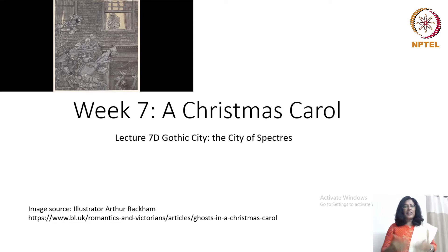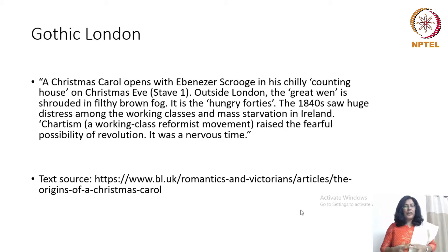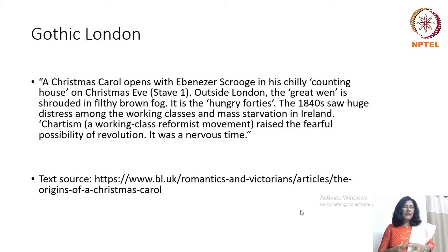A Christmas Carol opens with Ebenezer Scrooge in his chilly counting house on Christmas Eve outside London. The great van is shrouded in filthy brown fog. It is the hungry forties. The 1840s saw huge distress among the working classes and mass starvation in Ireland. Chartism, a working class reformist movement, raised the fearful possibility of revolution. It was a nervous time.